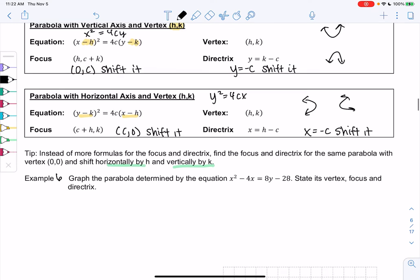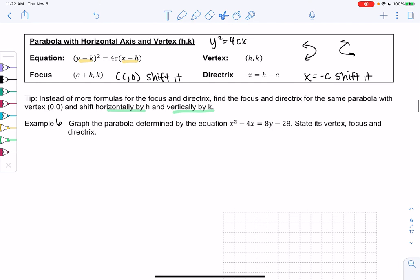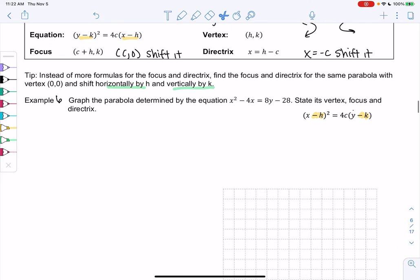So we need to get it in this format above: (x - h)² equals 4c(y - k). We're going to have to complete the square so the left side looks like (x - h)², and then we'll factor the right side so it looks like 4c times (y - k).